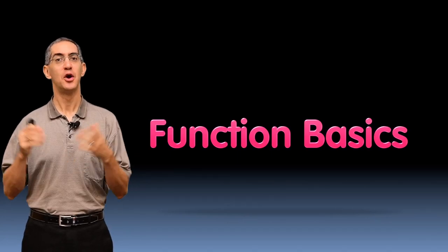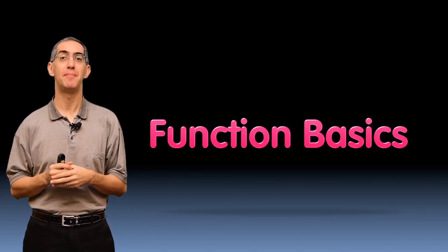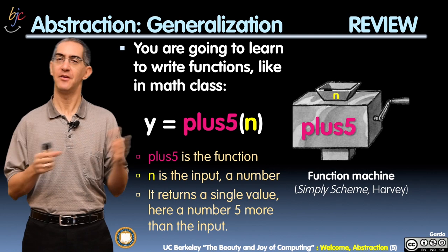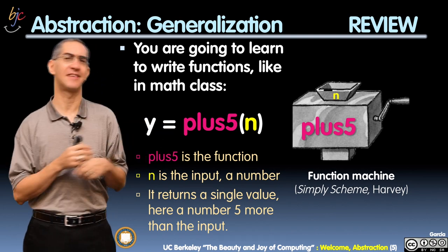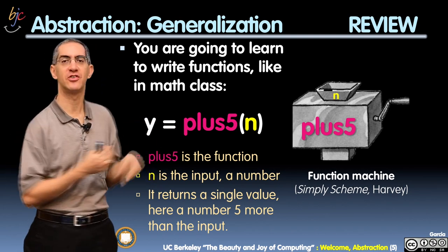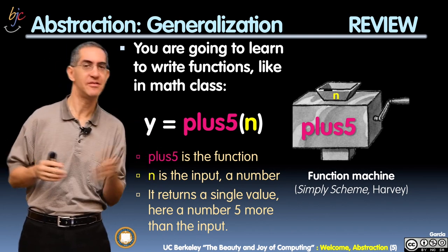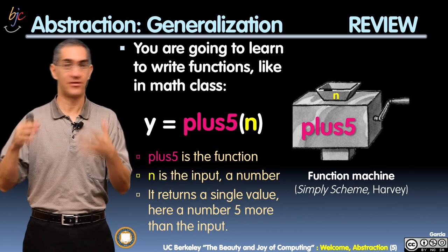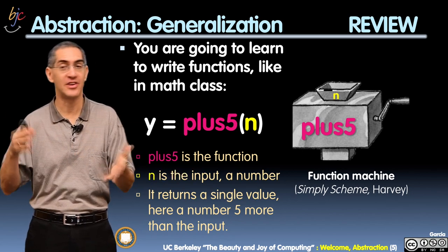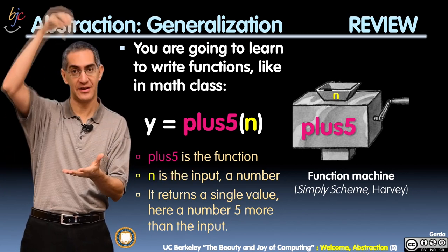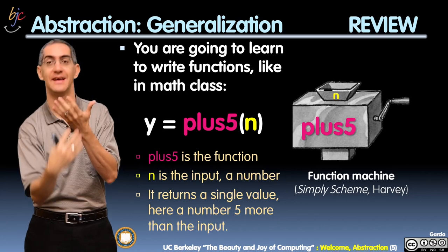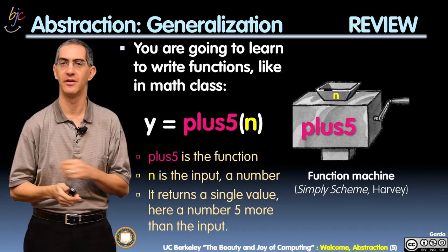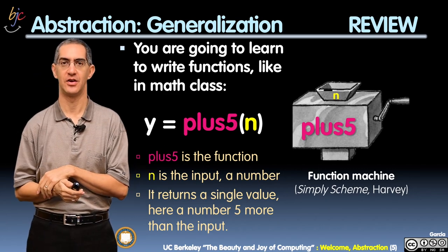All right, welcome back, folks. We're talking about the basics of functions now. And we saw this last time — here's a picture of a function machine. The idea is just like a swords-to-plowshares idea: you put in something at the top, turn a crank, and out comes a single piece of output. So we saw this before — that's not new.